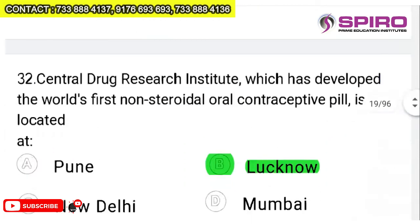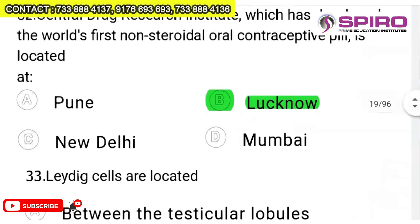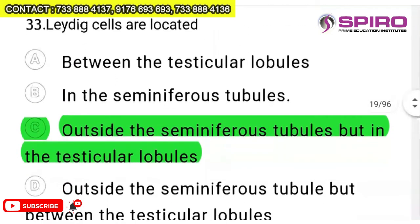Question 32: the Central Drug Research Institute, which developed the world's first non-steroidal oral contraceptive pill, is located at Lucknow — straight from the book. India is the first in the world to do this. Question 33: Leydig cells are located outside the seminiferous tubules but within the testicular lobules — option C. A bit of anatomy is required, and it is given in the NCERT book.